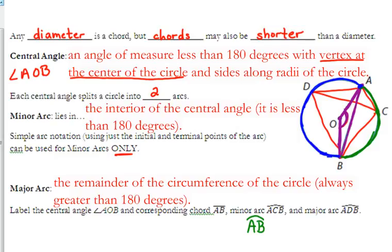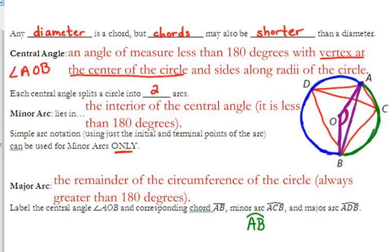So if you see any arcs with only two letters, you're going shortest distance from the first letter to the second letter. So I wouldn't go counterclockwise to get from A to B. I would go clockwise to get from A to B, because that's the shorter distance. Questions about any of our terminology so far?